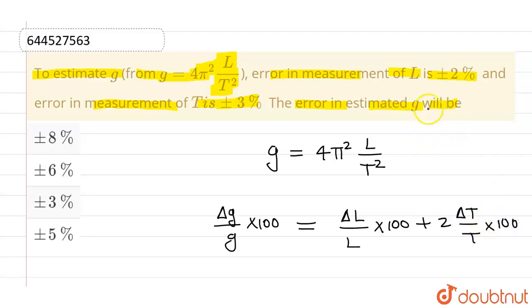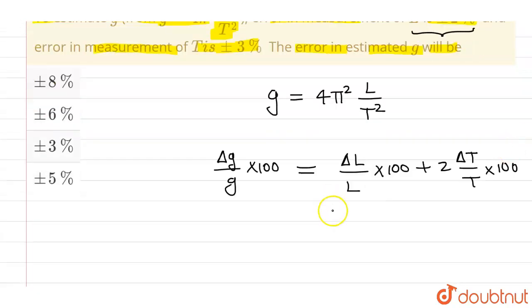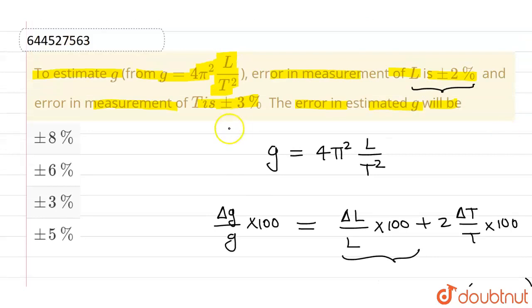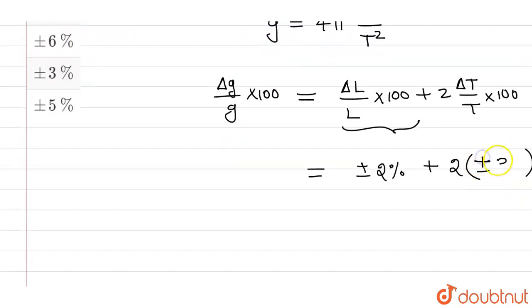Now since we are already given that the error in measurement of L is ±2%, so ΔL/L × 100, this is ±2%. Further, plus 2 times ΔT/T × 100, which is given as ±3%, so this is ±3%.